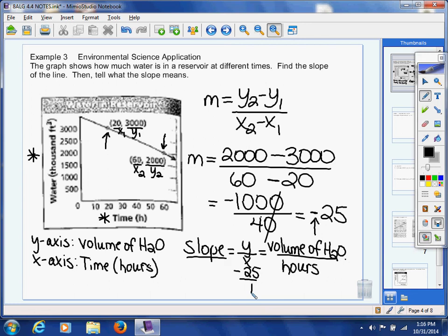So, that negative 25, what that tells me is that the volume of the water is decreasing by 25. That's what it's telling me. The negative sign means it's going down. The reservoir is not increasing in the amount of water. It's decreasing. It's losing water. It's decreasing by 25,000 cubic feet. If you read the Y axis here, that's what it says. 25,000 cubic feet. It's losing that much every single hour. That's what the one means. The one hour. Every hour, the reservoir is losing 25,000 cubic feet every hour.